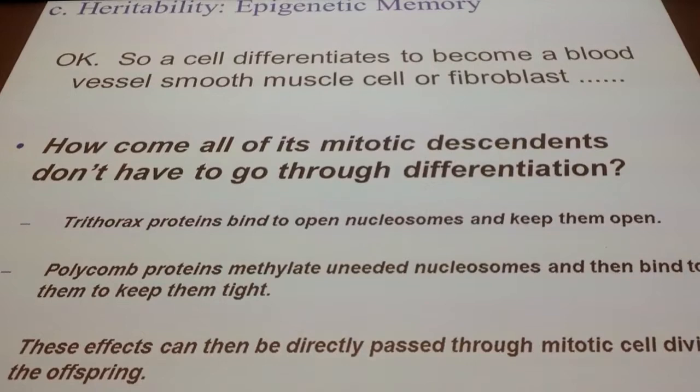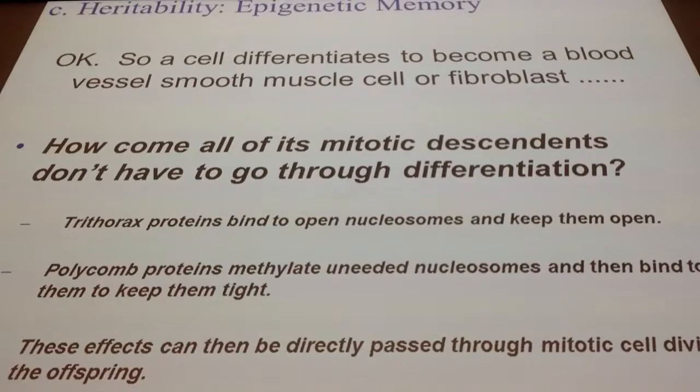For simplification: if you inherited the trithorax protein, then these genes are active. If you inherited the polycomb protein, then you have inactivated genes. Obviously it's more complex because you have 24,000 genes, and so how does the trithorax protein know which gene to turn on — it's a lot more complex. People are still trying to figure out exactly how that's regulated. But do you have a sense of what epigenetic memory means?